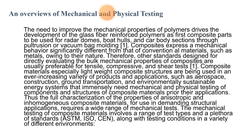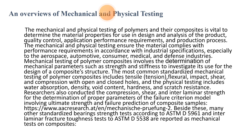The mechanical testing of composite materials involves a range of test types and a host of standards — ASTM, ISO, EN — along with testing conditions in a variety of different environments. The mechanical and physical properties testing of polymers and their composites is vital to determine material properties for use in design and analysis of product quality, quality control, application performance requirements, and production processes. The mechanical and physical testing ensures the material conditions and material compliance with performance requirements in accordance with industrial specifications, especially in the aerospace, automotive, consumer, medical, and different industries.